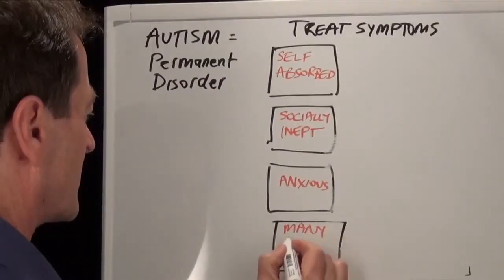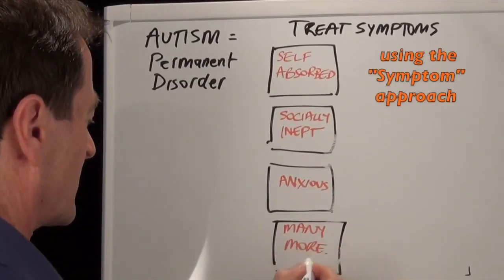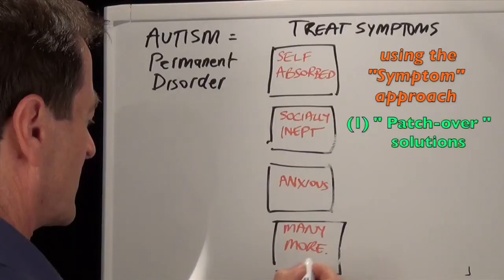To explore the shortcomings of the Disorder Symptom Approach, we'll use this list of classic autism symptoms as examples. My assertion is therapy type one can only offer patch-over solutions that potentially depersonalize your child.